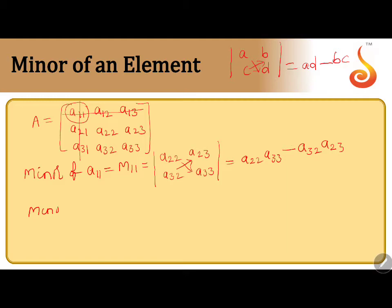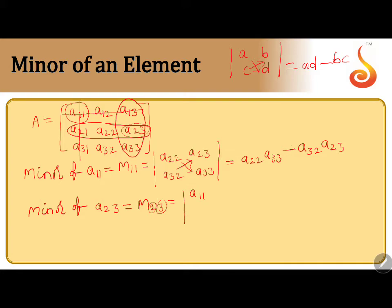One more example. Minor of A23 — the second row, third column element — is denoted by capital M23. It is defined as the determinant of the submatrix obtained by deleting the second row and third column. The remaining elements are A11, A12, A31, A32. So the determinant is A11·A32 minus A31·A12. This is the way of finding the minor of an element.